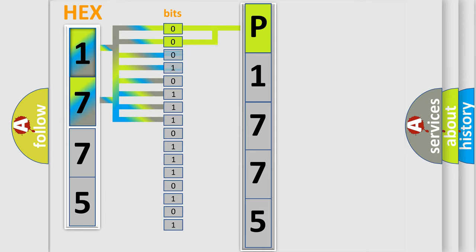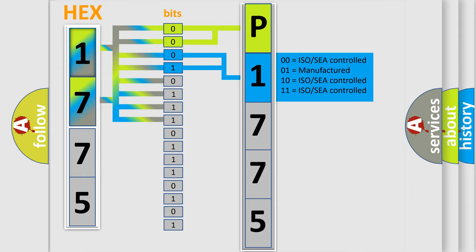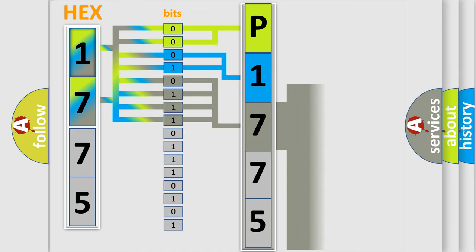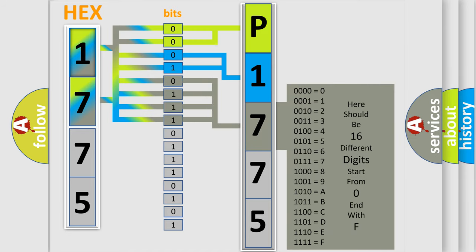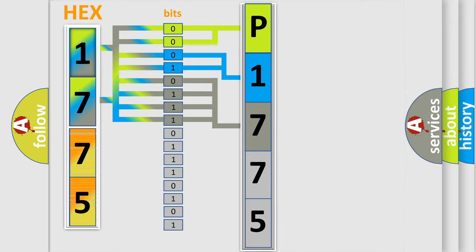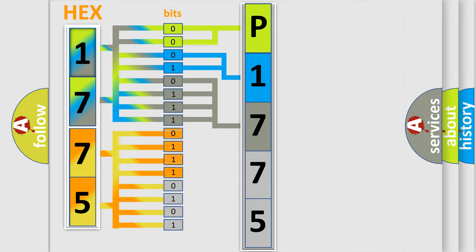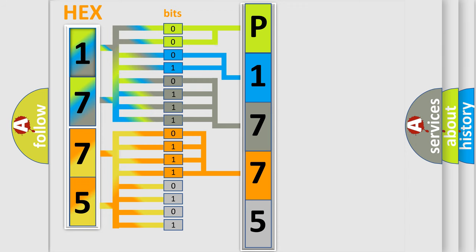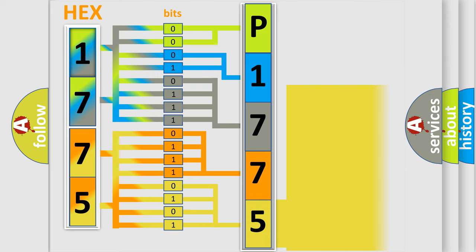The next two bits again determine the second character. The last bits of the first byte define the third character of the code. The second byte is composed of a combination of eight bits. The first four bits determine the fourth character of the code, and the combination of the last four bits defines the fifth character. A single byte conceals 256 possible combinations.